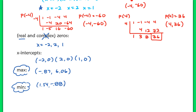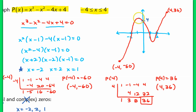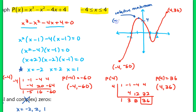Going back to our sketch, let's label those coordinates. We have a relative max — also written as maxima — at (negative 0.87, 6.06), and a relative min at (1.54, negative 0.88).